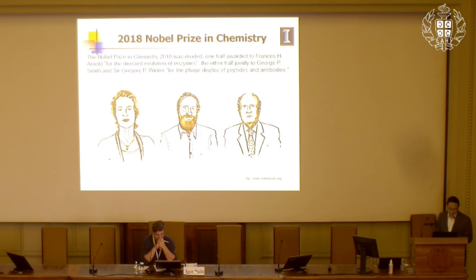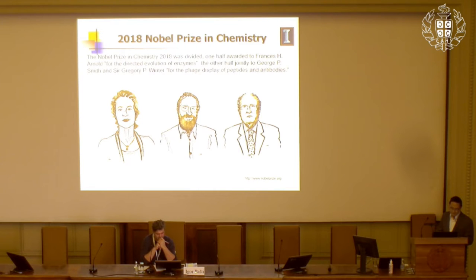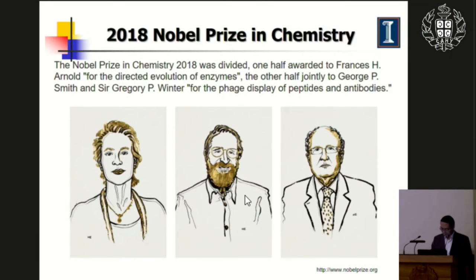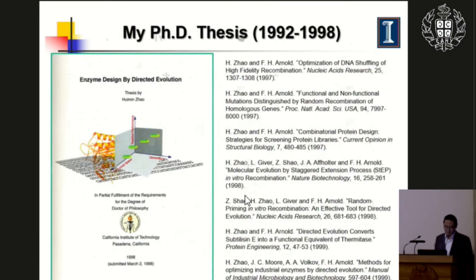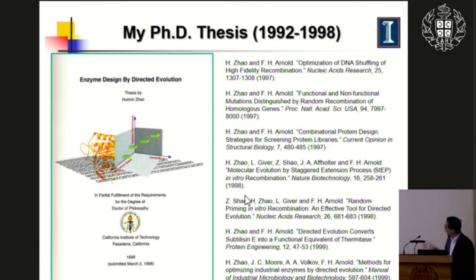The 2018 Nobel Prize in Chemistry was given to the pioneers in this field, including my former PhD advisor Frances Arnold. My PhD thesis, while I was in her lab, was focused on Directed Evolution. The title was 'Enzyme Engineering by Directed Evolution.' I developed many of the tools that are now currently used in this field.